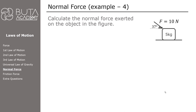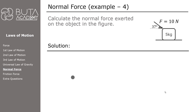In the fourth case, there is a 10 Newton force pushing the object, but this force makes 37 degrees with the horizontal. The task is to calculate the normal force applied on this object. As usual, we start with drawing a free body diagram for the given object — the first two forces we draw are the force of gravity and the normal force.